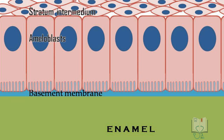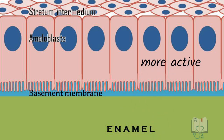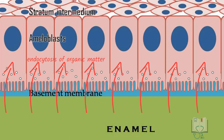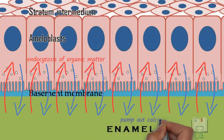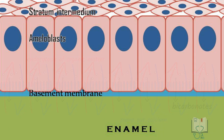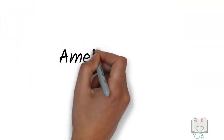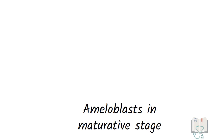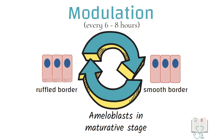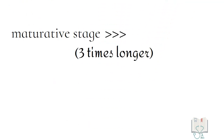The distal surface of the ameloblasts alternates between being smooth and ruffled. When cells have a ruffled border, they are relatively in a more active state — the ameloblasts have numerous lysosomes, show endocytosis of enamel organic matrix, simultaneously pump out calcium for mineralization, and release bicarbonates to maintain the pH. When ameloblasts have a smooth border, they are relatively less active and only absorb some enamel proteins. This cyclic alternation between ruffled and smooth borders is called modulation, and it occurs every 6–8 hours. The maturative stage is about three times longer than the formative stage.